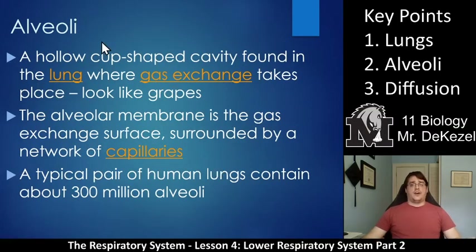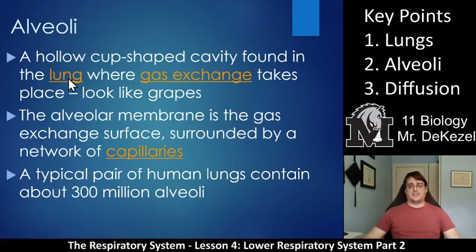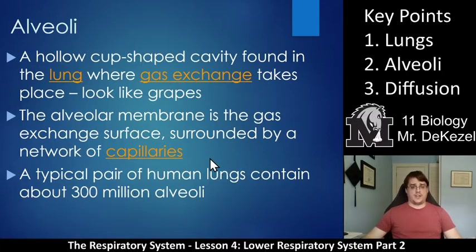Key point two: alveoli are in the alveolar sacs and look like grapes — each tiny sac is an alveolus, and this is where gas exchange takes place. The alveolar membrane is the gas exchange surface and they are completely surrounded by a network of capillaries, which are tiny blood vessels. A typical pair of human lungs contains about 300 million alveoli.